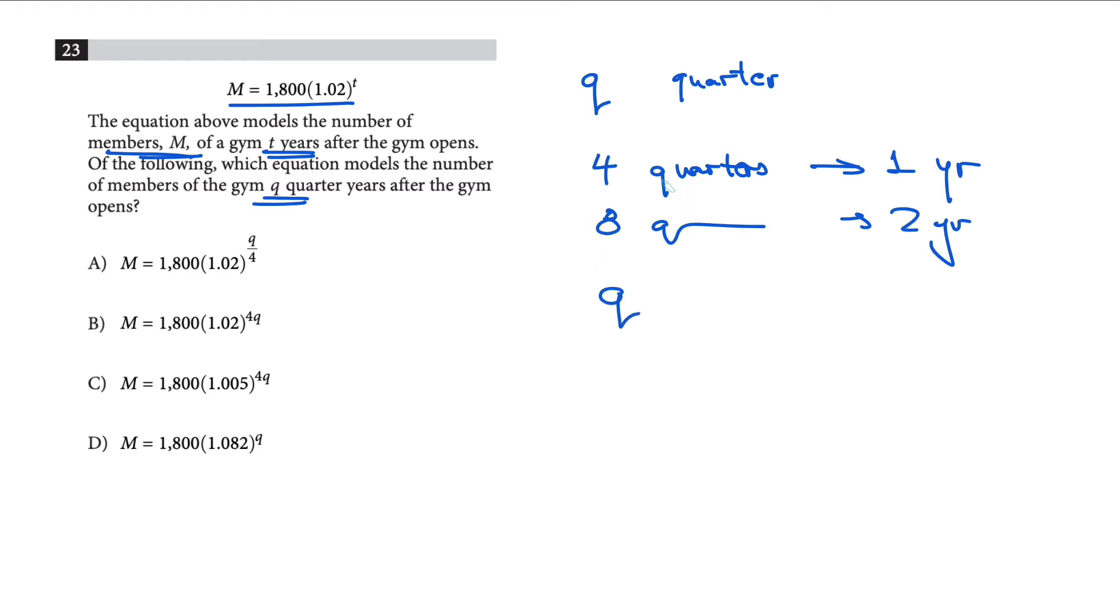To convert from quarters to years, you divide by four. So q quarters translates to q/4 years. That's what this question is asking - what's the t value?